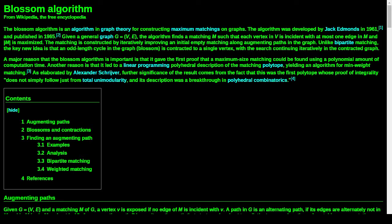In preparation for a previous stream, I prepared a CSS stylesheet just for Wikipedia - that's the source here. The Blossom algorithm is an algorithm in graph theory for constructing maximum matchings on graphs, developed by Jack Edmonds in 1961 and published in 1965. Given a general graph G, the algorithm finds a matching M such that each vertex in V is incident with at most one edge in M and the cardinality of M is maximized.